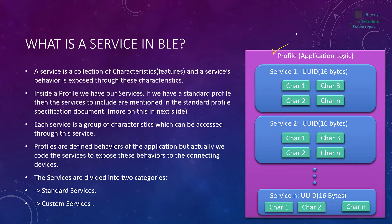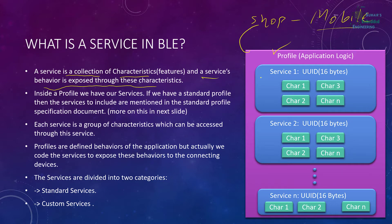So what is a service itself? A service is a collection of characteristics. Characteristics are basically the data points — these are the data points where we are going to put our data. A service is a collection of these, and a service's behavior is exposed through these characteristics. For example, we have a shop about mobile phone devices. The services in simple terms are what the shop provides — for example, a repairing service, new and old devices as a second service, and accessories related to mobile phones. Inside a profile we have our services.